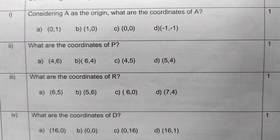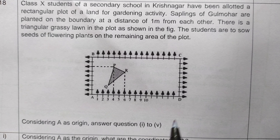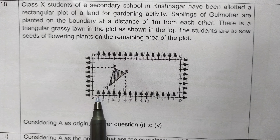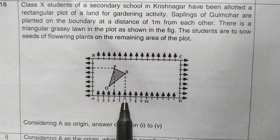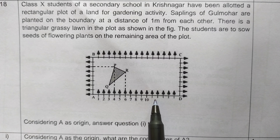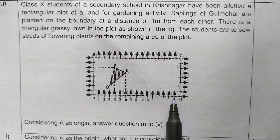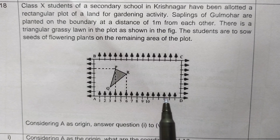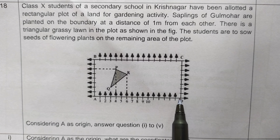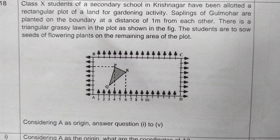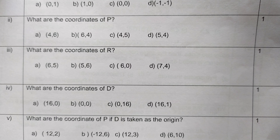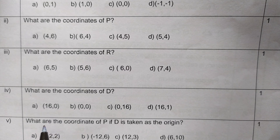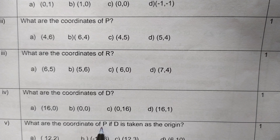The next question is: what are the coordinates of point D? Point D lies on the x-axis. Counting the x-coordinate: one, two, three... up to sixteen — so x is 16. Since D is on the x-axis, its y-coordinate is zero. So the coordinates of D are (16, 0), and option A is the correct answer.